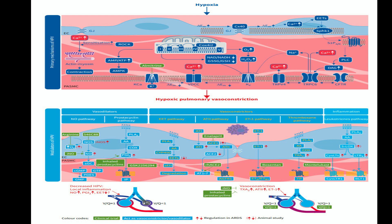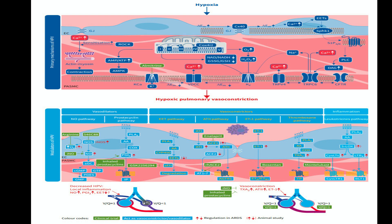The primary mechanism of HPV involves oxygen sensing by mitochondria, which then alters the cellular redox state or releases reactive oxygen species. These changes trigger various plasma membrane ion channels, leading to an increase in cytosolic calcium and HPV.